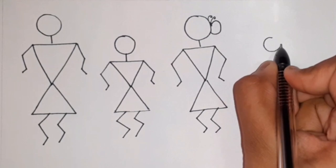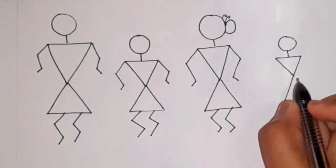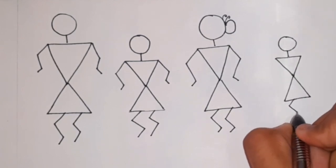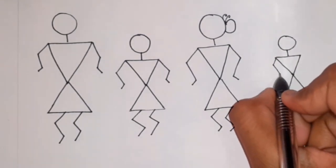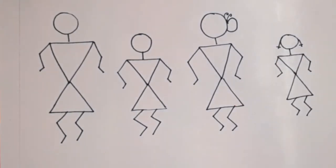Now to draw the girl we draw the same body structure of the boy and to differentiate her from the little boy we simply show some hair by drawing two plaits on the head which is simply done by two slanting lines.